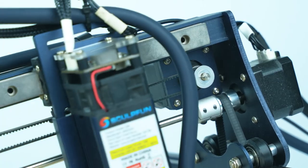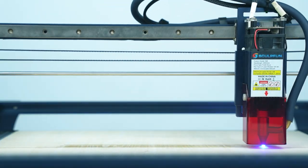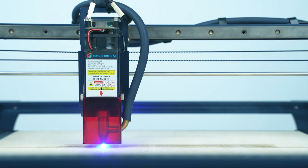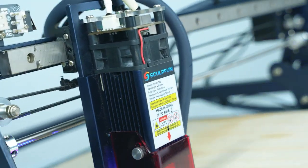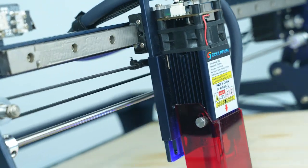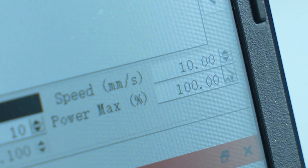Machines that use linear guides have a more stable x-axis, therefore it can break through the maximum speed. And the lighter the laser weight, the stronger the stability, the higher the speed that can be broken through.